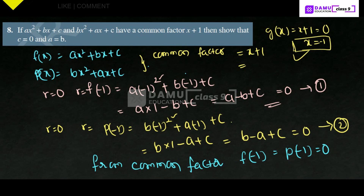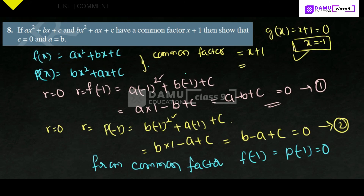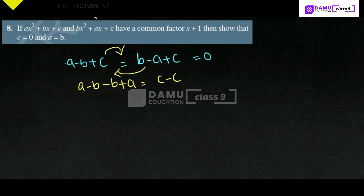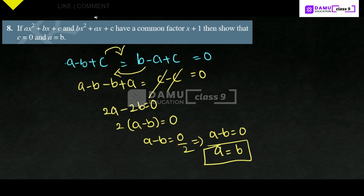Both equations need to be equated: a - b + c = 0 and b - a + c = 0. Shifting all terms — a and b terms together — gives: a - b - b + a = c - c, so 2a - 2b = 0, taking 2 as common gives a - b = 0. Therefore a - b = 0/2 = 0, which implies a = b.